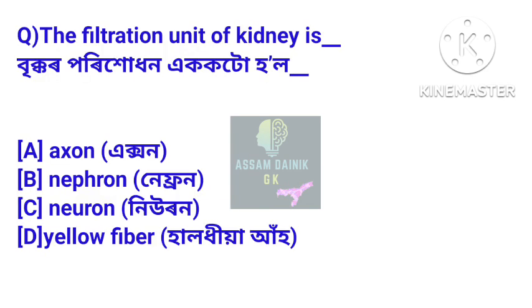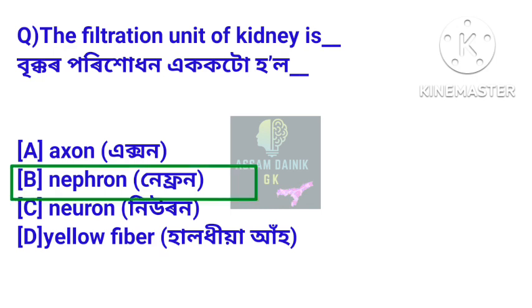The filtration unit of kidney is? Bikkor pori hudhanor ekoktu hoi. Answer: nephron. Nephron ne hoi bikkor pori hudhanor ekoktu hoi.